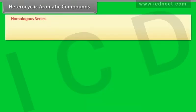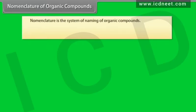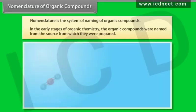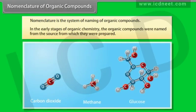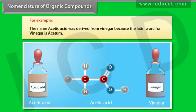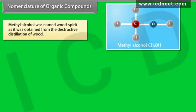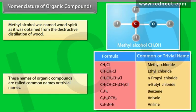A homologous series may be defined as a series of structurally similar compounds, each member of which differs from the preceding or succeeding member by one CH2 group. The members of the series are known as homologs. Nomenclature is the system of naming organic compounds. In the early stages of organic chemistry, compounds were named from the source from which they were prepared — these names are called common names or trivial names.